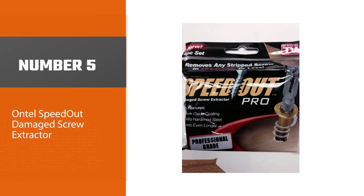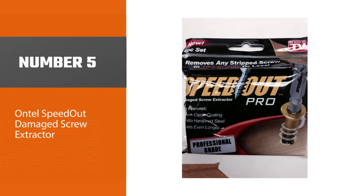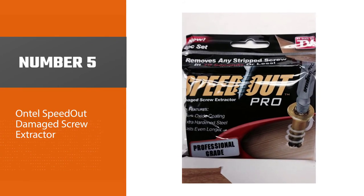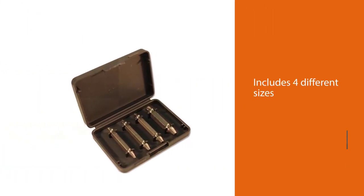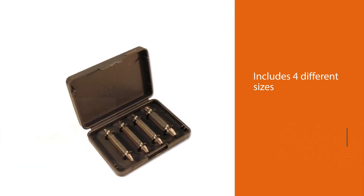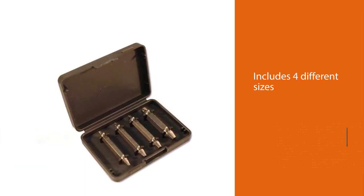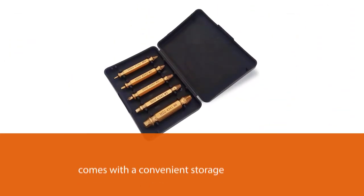Number five: Ontel Speed Out Damaged Screw Extractor. The set includes extractors in four different sizes and comes with a convenient storage case. The product is made in China, with each of the extractors being made of carbon steel.